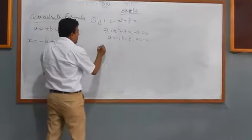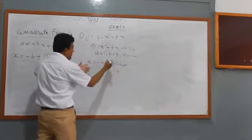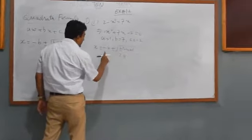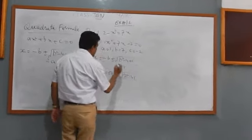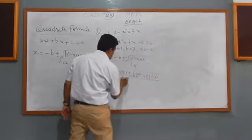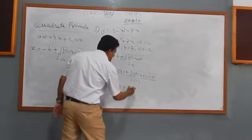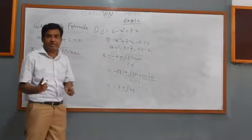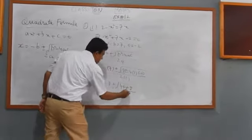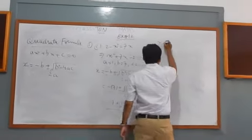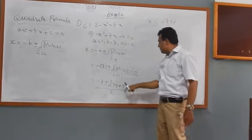Now we substitute the values. x equals minus 7 plus minus under root 7 square minus 4 times 1 times minus 2, over 2 times 1. Simplifying, minus 7 plus minus under root 49. We simplify under root: 49 plus 8 gives 57.